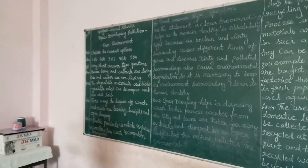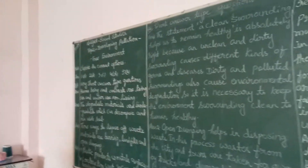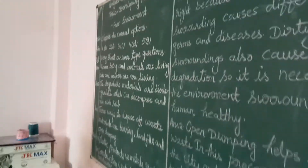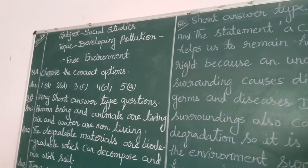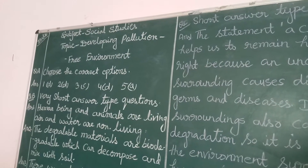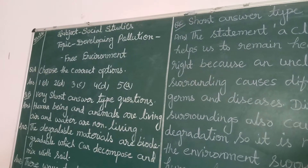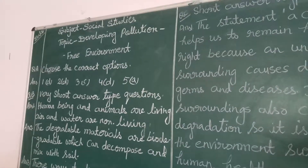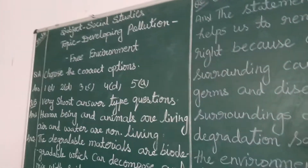Question number 1. Choose the correct option from the following. Number 1: Which of the following things is not a non-living thing? Answer: sunlight, clear water, human being. The answer is human being — human being is not a non-living thing.